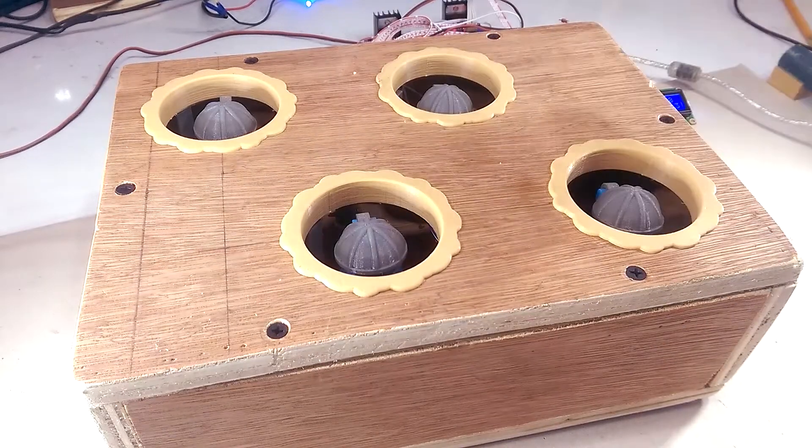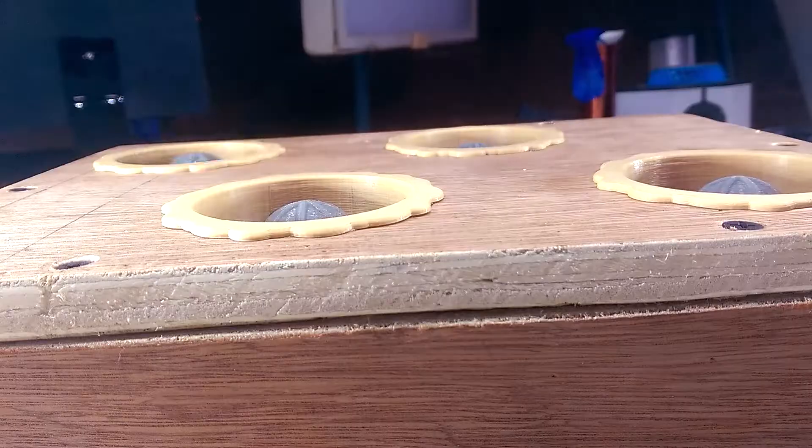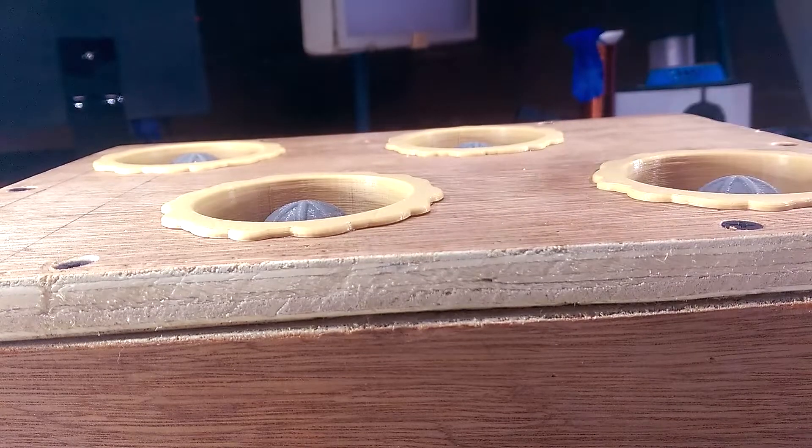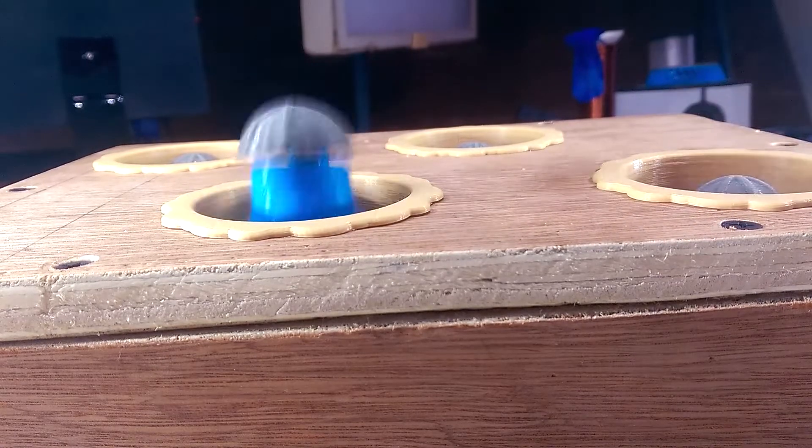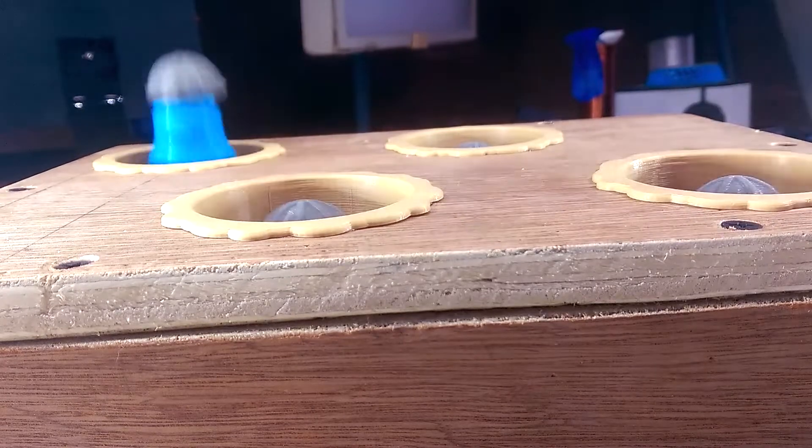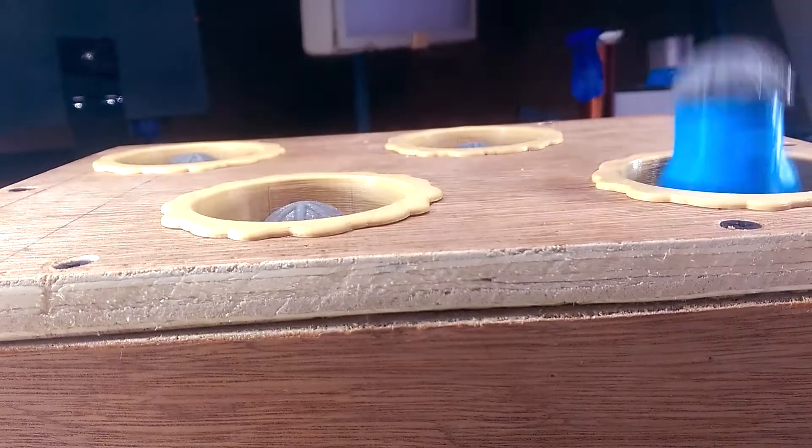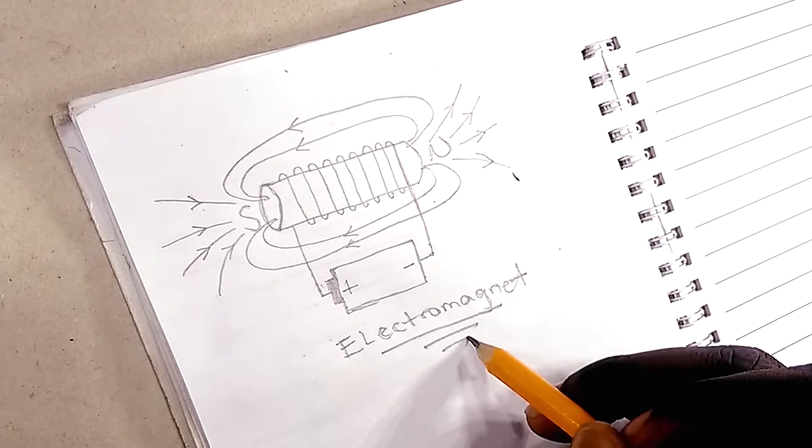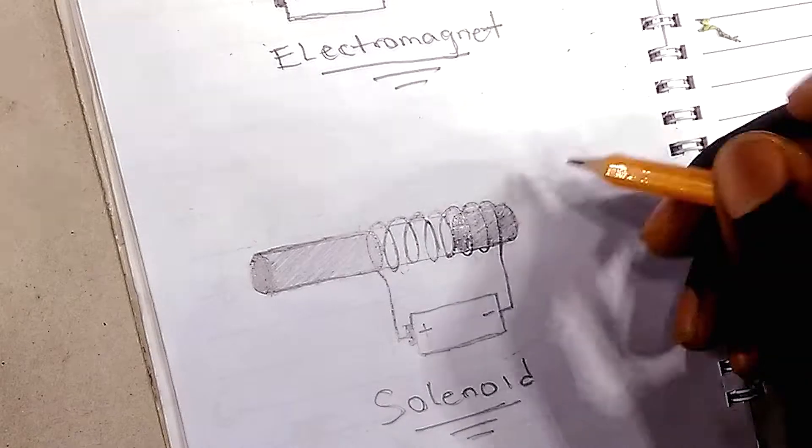Whack-a-mole is a mostly mechanical game, so the first thing I had to figure out was how to get the moles to pop up and down. This is a very fast and frequently occurring linear motion, and the only thing I could think of that can move linearly that fast and is also particularly suited for working is an electromagnet. More specifically, a solenoid.